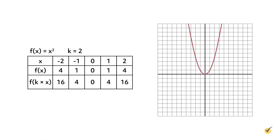A function can also stretch and compress horizontally. Horizontal compression happens when the x value is multiplied by a constant k greater than 1, using the formula f(k times x). Let's compress the function f(x) equals x squared horizontally by the constant k equals 2. Start by graphing the original function in red. The graph of f(x) equals 2x squared, shown in green, is a horizontal compression of f(x) equals x squared by a factor of 2. A graph is compressed when the x value is multiplied inside parentheses by a value greater than 1.